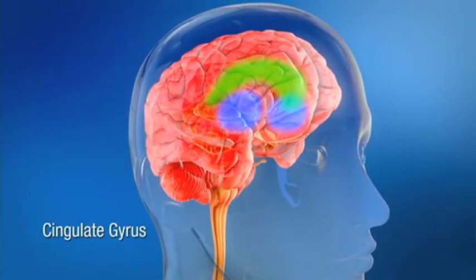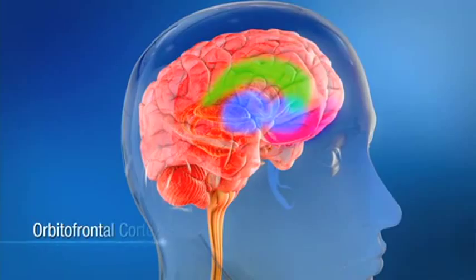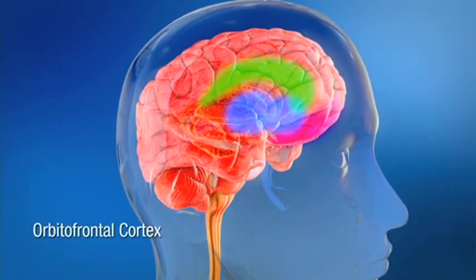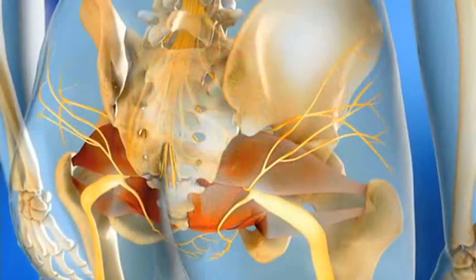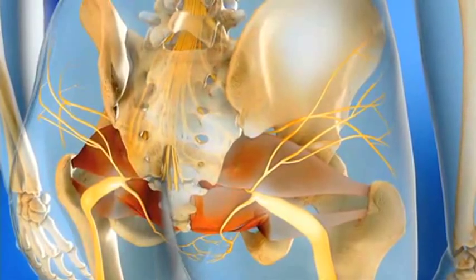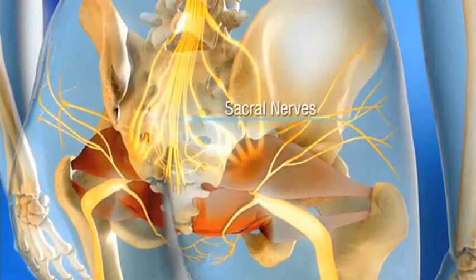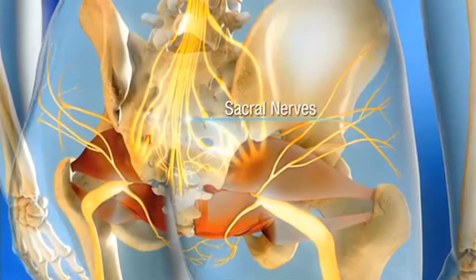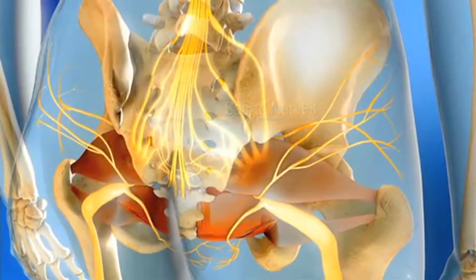There is decreased activity in areas believed to be crucial to voluntary bladder control. Normal bladder functioning can be restored by influencing the sacral nerves, which convey a portion of the signals between the bladder, pelvic floor, and the brain.